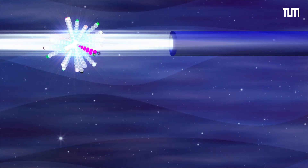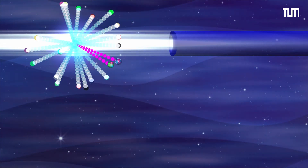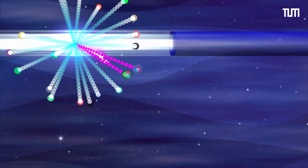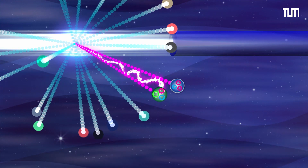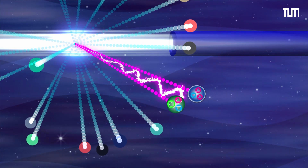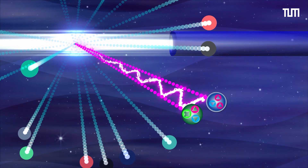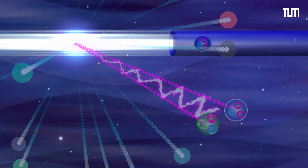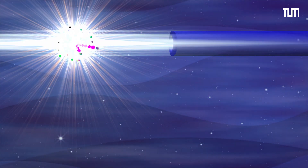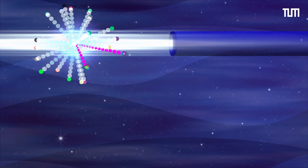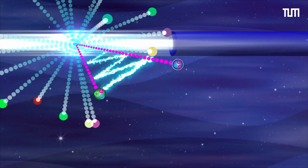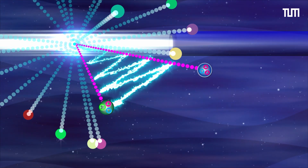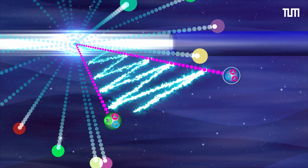By observing a proton-hyperon pair that leaves the collision center in parallel, the interaction can be measured. If their trajectories remain close, the force is attractive. If they diverge, the force is repulsive.